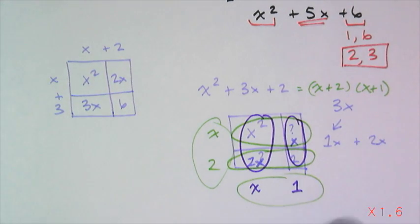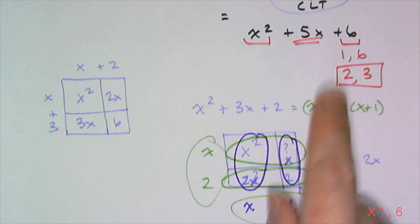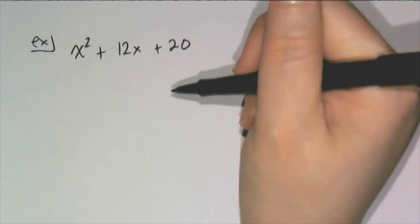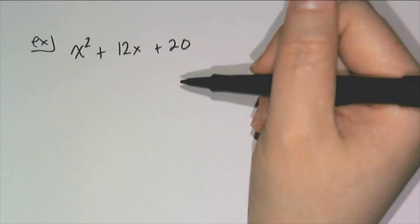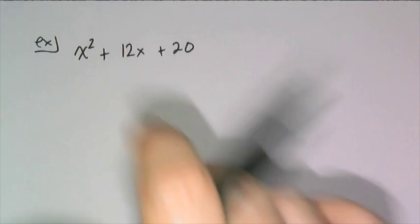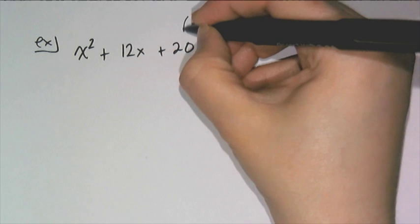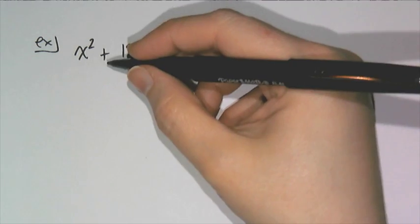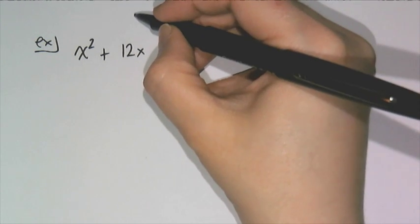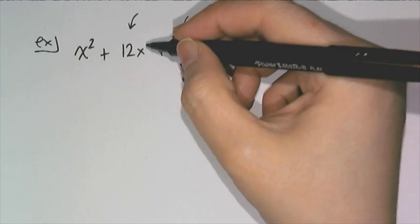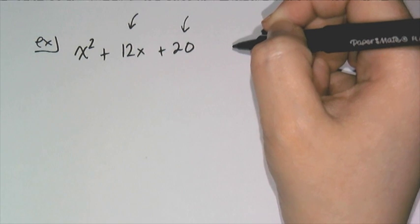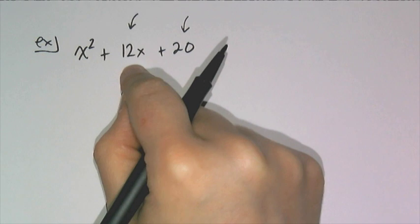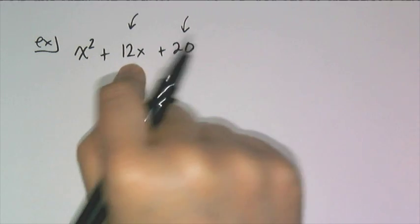Now let's do another example, something where the numbers are a bit bigger. So when asked to factor this, you can look at this in two ways. You can either focus on the 20 first and then make sure the 12 fits, or you can focus on the 12 and make sure the 20 fits.